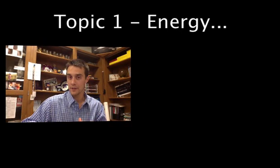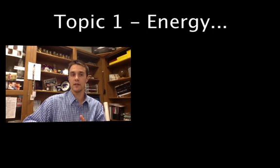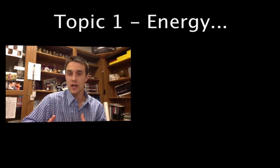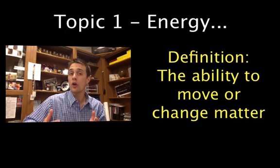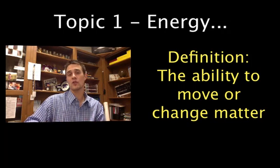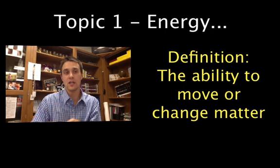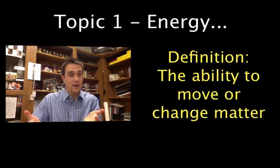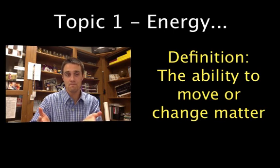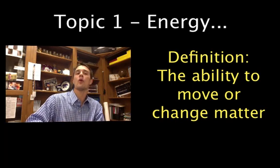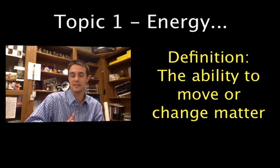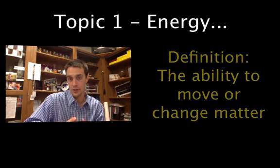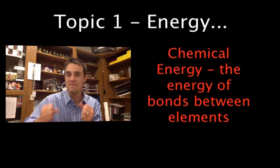Being able to move or change matter is the definition of energy. So if you can do work on something, you're expelling energy. Energy is all around us, and in advanced quantum sciences of physics, we can demonstrate how energy and matter are essentially one and the same. The type of energy you're always worried about as a human is chemical energy, and chemical energy is found in food.